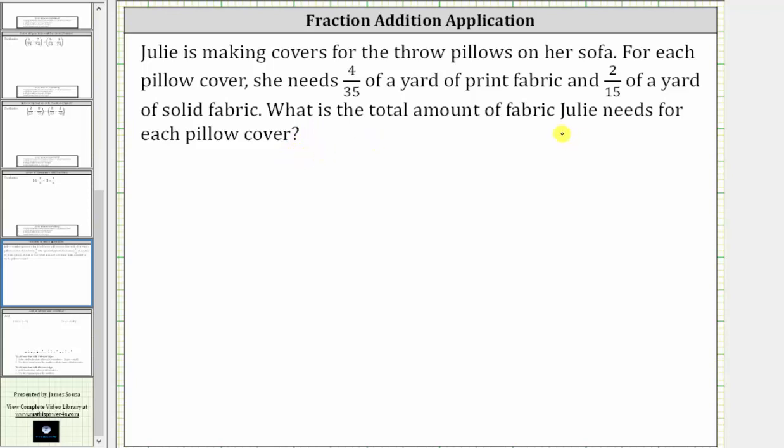To find the total amount she needs, we'll have to sum 4/35 of a yard and 2/15 of a yard, which gives us 4/35 plus 2/15.